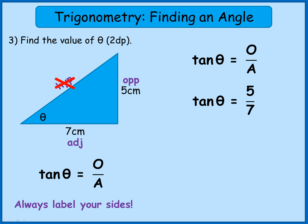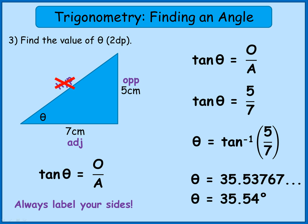And again get our calculator to undo that tan process. So I'm going to be using the tan minus 1 button this time. So theta is tan minus 1, 5 over 7. It comes out with 35.537 and some other numbers afterwards. You round to two decimal places, so that will round to 35.54 degrees.